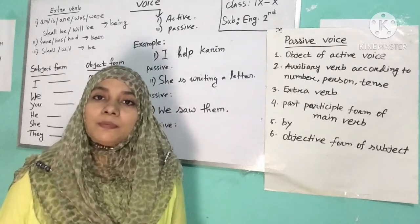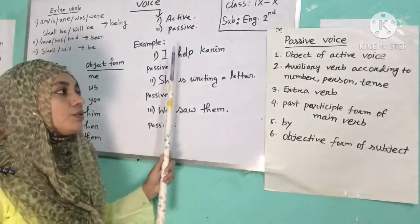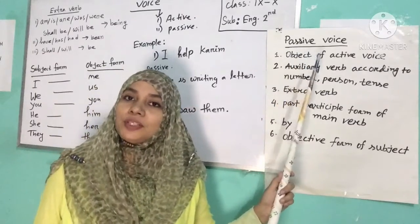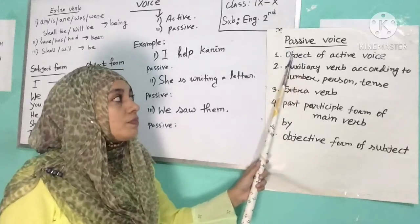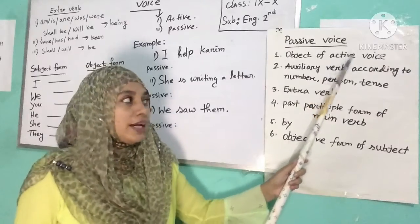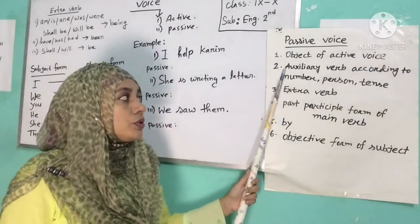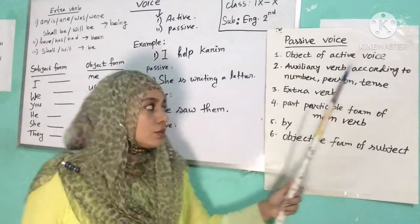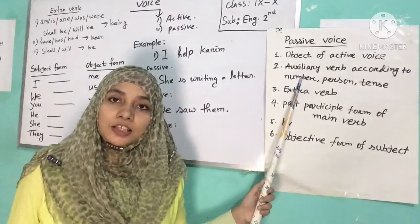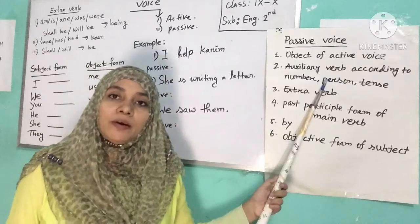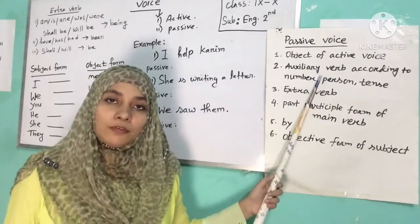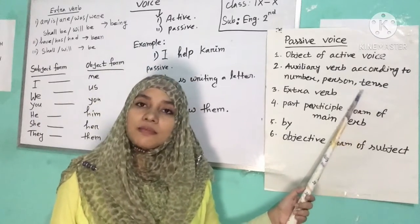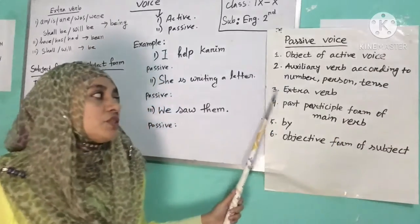To make a passive voice, we have to follow this sequence. Number one: use the object of the active voice. Number two: auxiliary verb according to number, person, and tense. If the subject is singular, use a singular verb; if plural, use a plural verb. If the sentence is in present tense, use the base form; if past tense, use the past form.